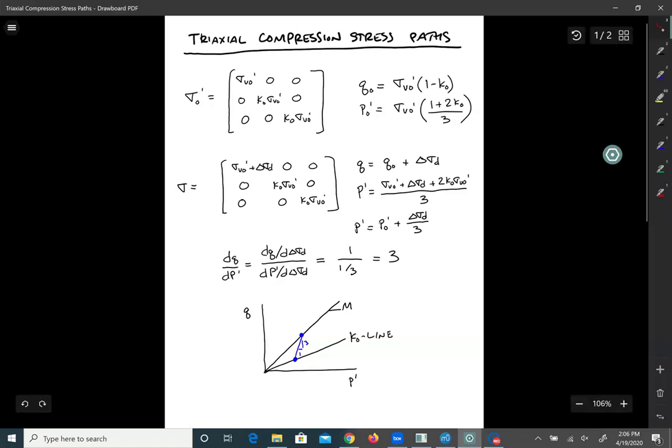So our definition of P prime is the average of these three. So you would get sigma V naught prime plus delta sigma D. That's that term. And then plus two times K naught times sigma V naught prime. That's the sum of those terms. And then you divide by three. And what we get is that we can simplify that down. P prime is equal to P naught prime plus delta sigma D over three.